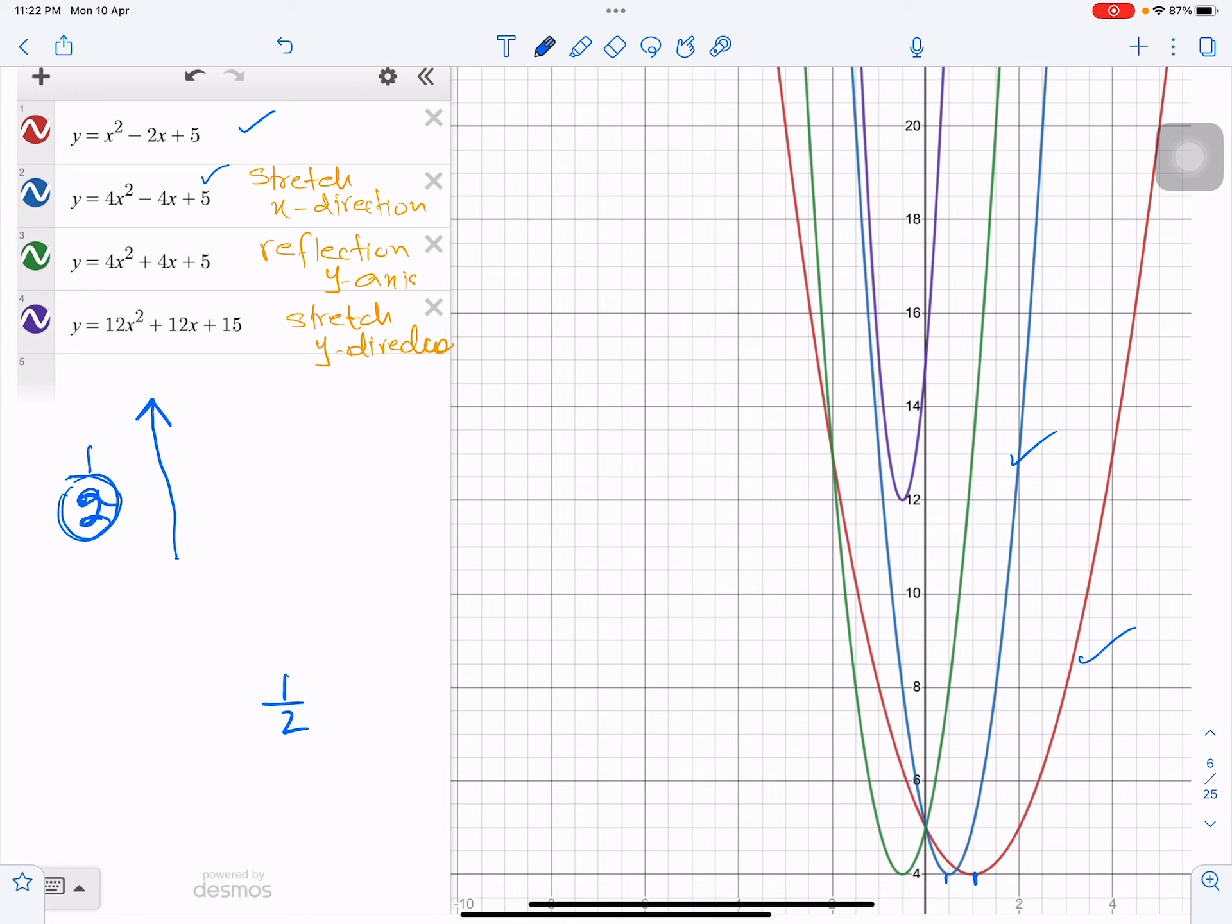Then the third, second step was reflection in the y-axis. So if you look at blue and green graph, they are reflection of each other in the vertical line which is y-axis. Then the last one was stretch along the y direction by scale factor 3. And what does that mean? That you multiply all the y values, all the y values of the graph by the stretch factor which was 3.